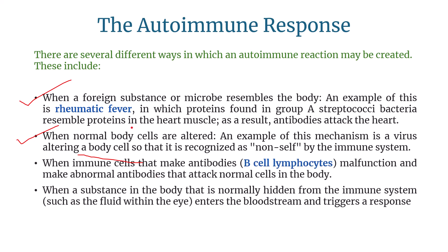B cell lymphocytes are the cells that make antibodies. When these cells malfunction and make abnormal antibodies that attack normal cells in the body, or when a substance in the body that is normally hidden from the immune system enters the bloodstream and triggers a response — for example, the fluid within the eye, which normally does not enter the bloodstream, but when it suddenly does, it is recognized as non-self.